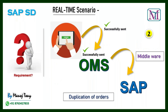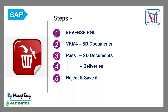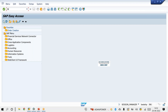Now I'll tell you the steps. Suppose duplicate orders were created and a list of deliveries was created — how do we delete that list of deliveries? First we have to reverse the PGI, and first we have to find out the list. To find the list, go to the billing due list transaction code, which is VF04.